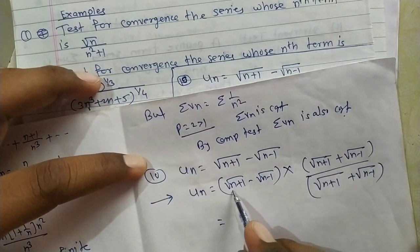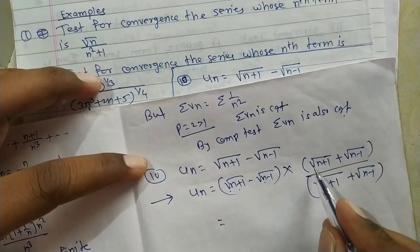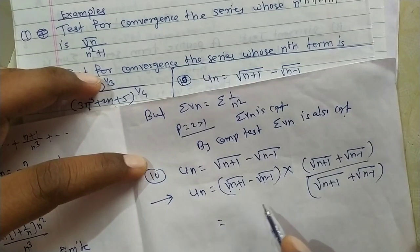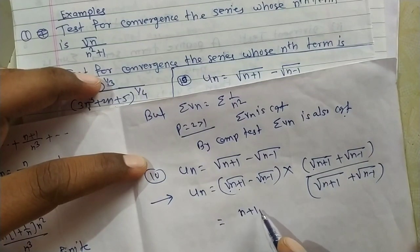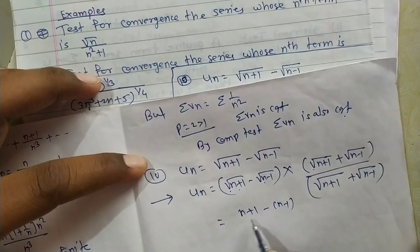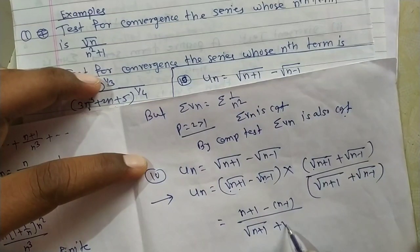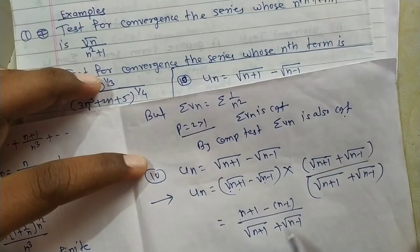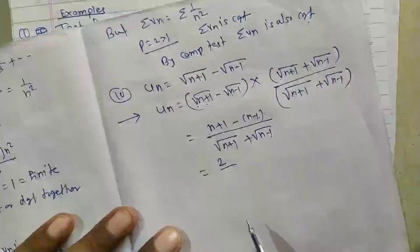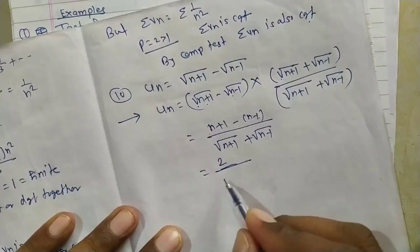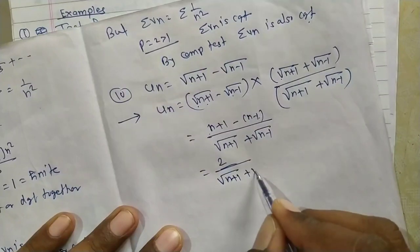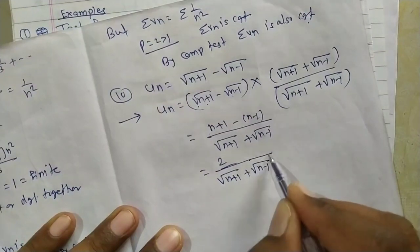Using the identity (a−b)(a+b) = a²−b²: [√(n+1) − √(n−1)][√(n+1) + √(n−1)] = (n+1) − (n−1). The n's cancel: (n+1) − (n−1) = n+1−n+1 = 2. So un = 2 / [√(n+1) + √(n−1)].